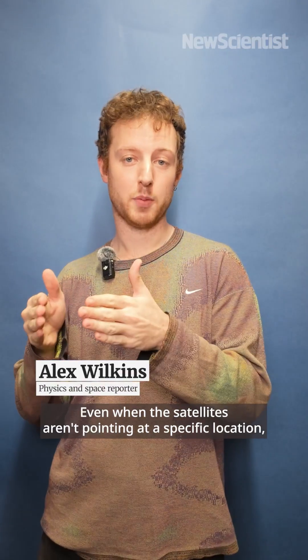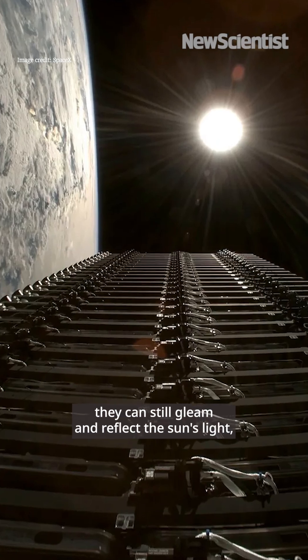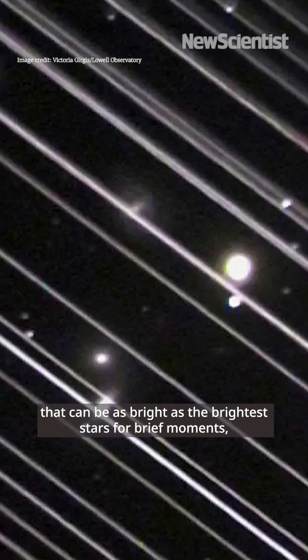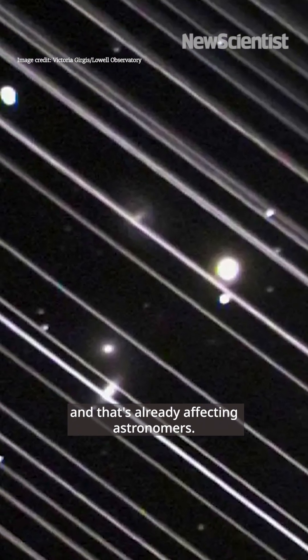Even when the satellites aren't pointing at a specific location, they can still gleam and reflect the Sun's light. This means that if you look at the night sky they can be as bright as the brightest stars for brief moments, and that's already affecting astronomers.